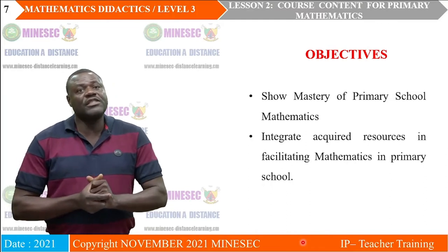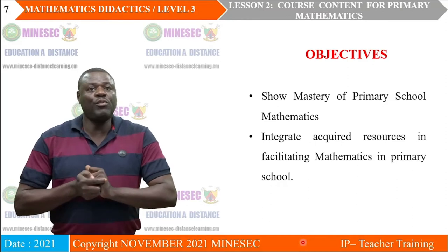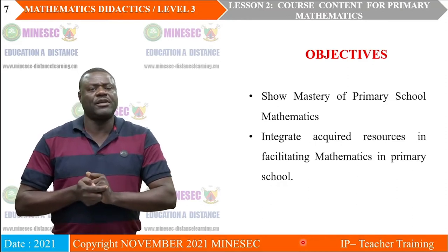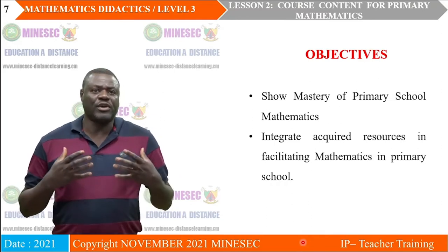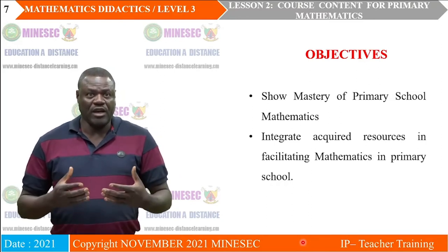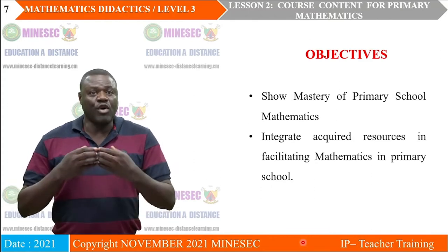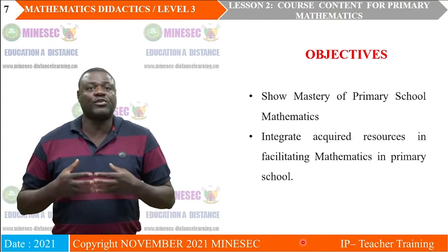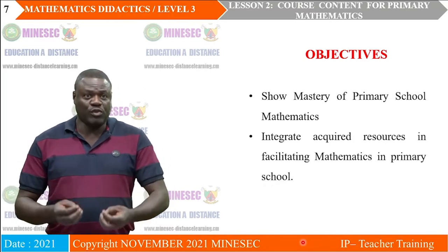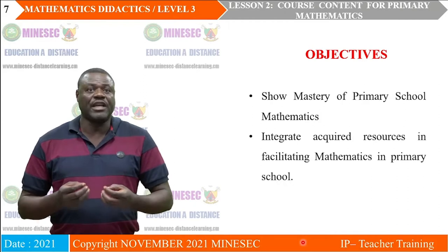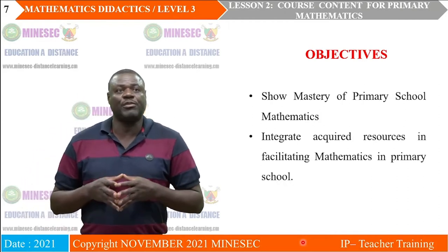The objective of this lesson for student teachers is to show mastery of primary school mathematics. In order to teach primary school mathematics, you need to understand the concepts thoroughly and show mastery of them. By the end of this lesson, you would have gone through all what is needed for you to teach mathematics in the primary school, and you should be able to use it in teaching and learning.